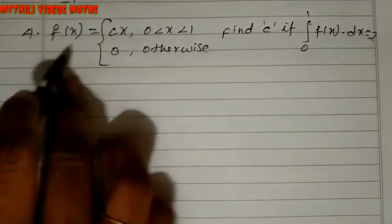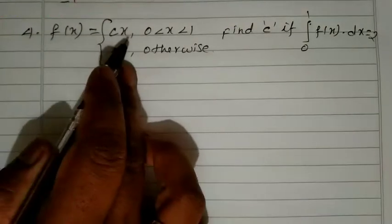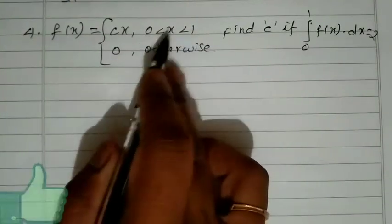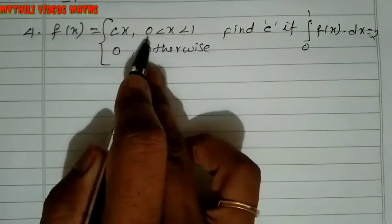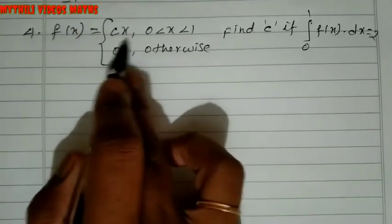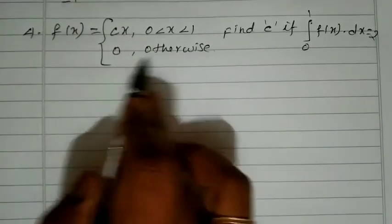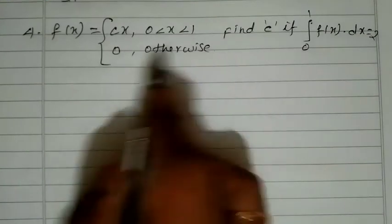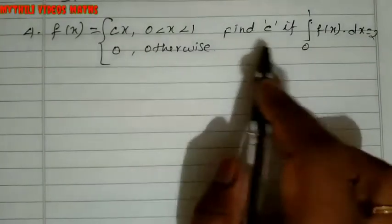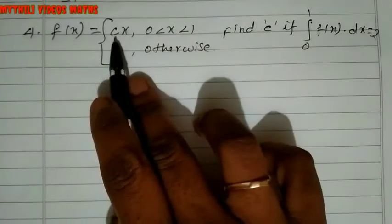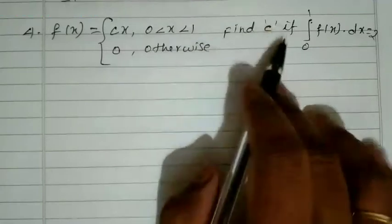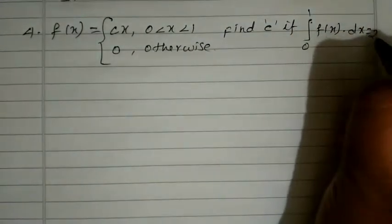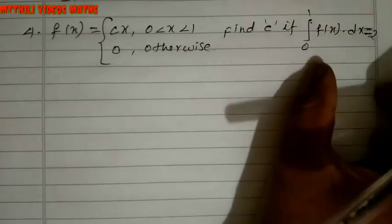Now we will see the fourth sum. That is: f(x) = cx where x lies between 0 and 1; otherwise f(x) = 0. We need to find the constant c, given that the integral from 0 to 1 of f(x) dx equals 2.